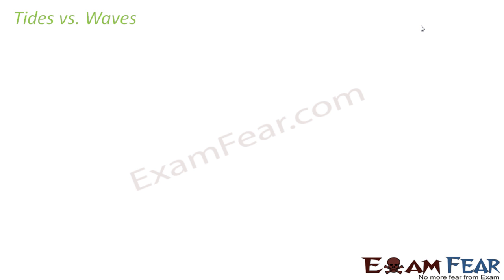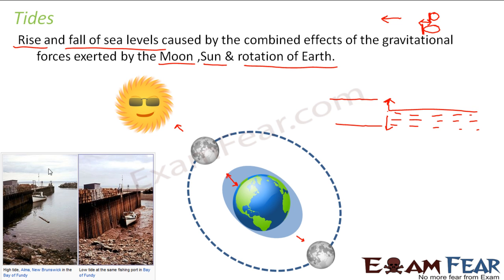Let us look at the difference between tides and waves more clearly. Here I have shown a picture of a bay — how it looks during a high tide and how it looks during a low tide. During a high tide, the bay is filled with water because the water level itself has increased. During a low tide, the water level has reduced and there is no water in the bay at all. This is how the same bay looks during a high tide and a low tide.